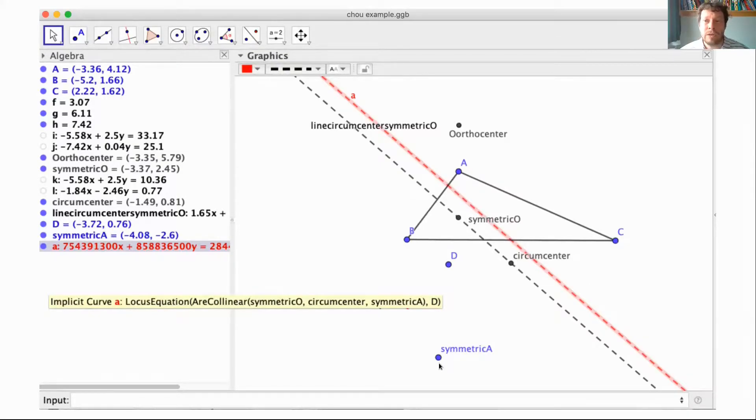Obviously this symmetric point doesn't lie in general on the line defined by the circumcenter and symmetric orthocenter. We would like to discover a new theorem about where to place D so that this alignment occurs. The answer is: place D on the red line. This is a necessary condition, maybe not sufficient.